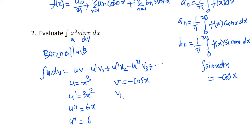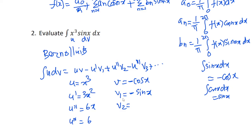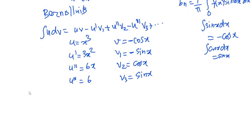So likewise, v1: we integrate −cos(x) once, which gives sin(x). v2: integrating sin(x) gives −cos(x). v3: integrating again gives −sin(x). The integral of x³·sin(x) dx is solved using the UV integration by parts formula.